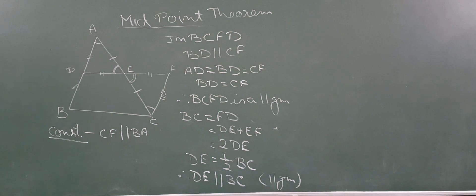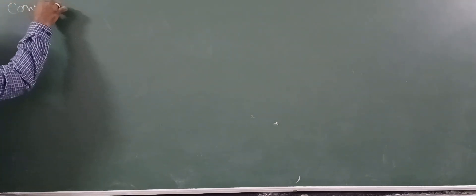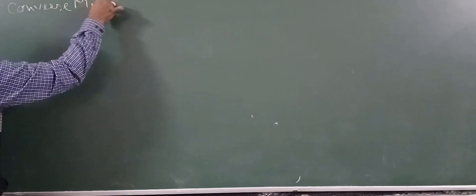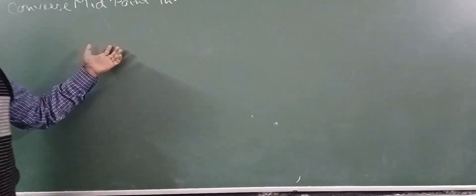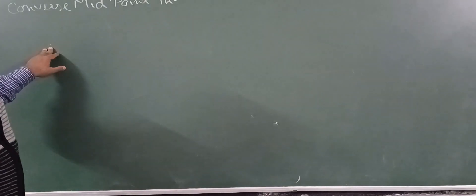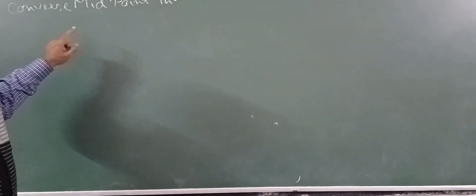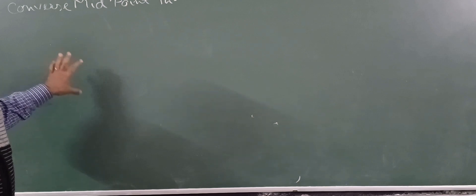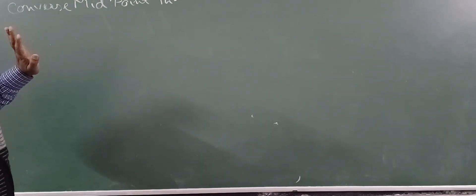Hope you are able to understand this proof of the midpoint theorem. Depending on the midpoint theorem, we have two more theorems — the converse of the midpoint theorem. This converse says just the opposite of the midpoint theorem. In the midpoint theorem, we say that if we join the midpoints of two sides of a triangle, then that line segment is half of the third side and parallel to the third side.